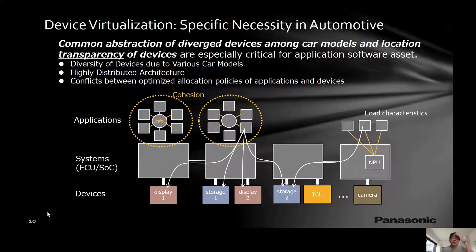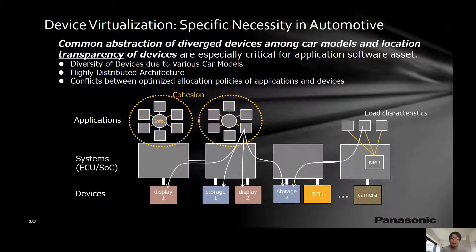In automotive computing architecture, there are some specific necessities or needs for device virtualization, in addition to the general ones. The first necessity is simple: depending on car grade or car model, the equipped devices can vary. For example, there are a variety of displays among car models or car grades in the same OEM. The number, size, or aspect ratio of displays can be different among car models or grades. We need common abstraction for such diverged devices to preserve software assets.